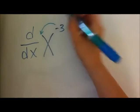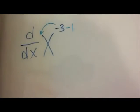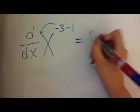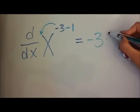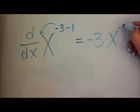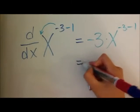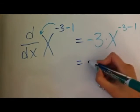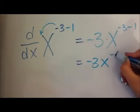We're going to put negative 3 to the front, and we're going to subtract 1 from negative 3. And this is going to equal to negative 3 times x to the power of negative 3 minus 1. And that is going to give you negative 3x to the power of negative 4.